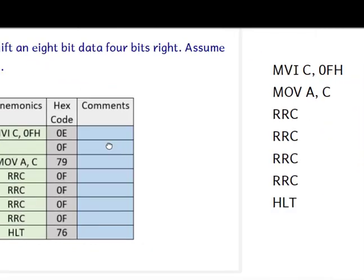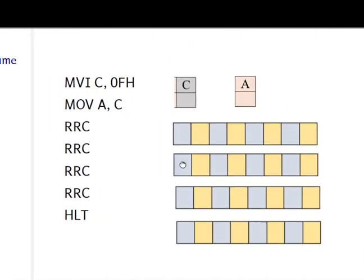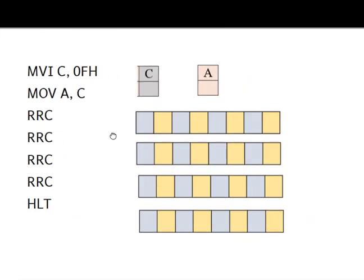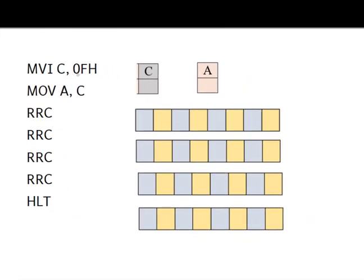Let us first see the program. The first instruction is MVI C, 0FH — so 0F will be stored in register C. Then MOV A, C transfers the data from register C to register A, so register A becomes 0F. We need to rotate the data four times right, and rotation can only be done with respect to register A — we cannot rotate the contents of C directly.